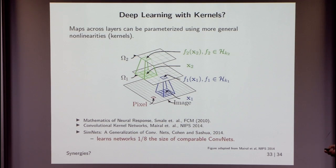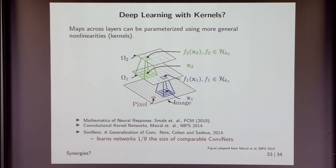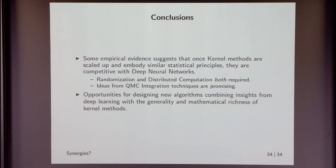There are also opportunities for theoretical work at the intersection of deep learning and kernels — multi-layer networks where instead of linear functions followed by scalar nonlinearities you use more general nonlinear mappings defined through a kernel. Some recent papers by Lorenzo and others show that generalizing using insights from both deep learning and kernels allows you to compute convolutional neural nets that are much more compact while giving the same performance. This subject seems ripe for theoretical investigation.